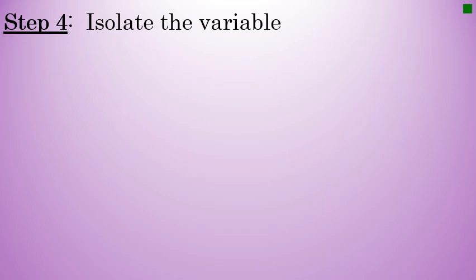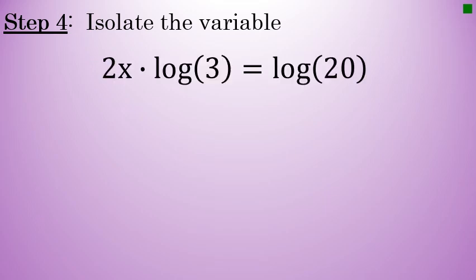The fourth and final step is to use algebra to isolate the variable. Here, our variable x is being multiplied by 2 and the log of 3. So I can isolate x by simply dividing both sides of the equation by 2 and a factor of the log of 3.